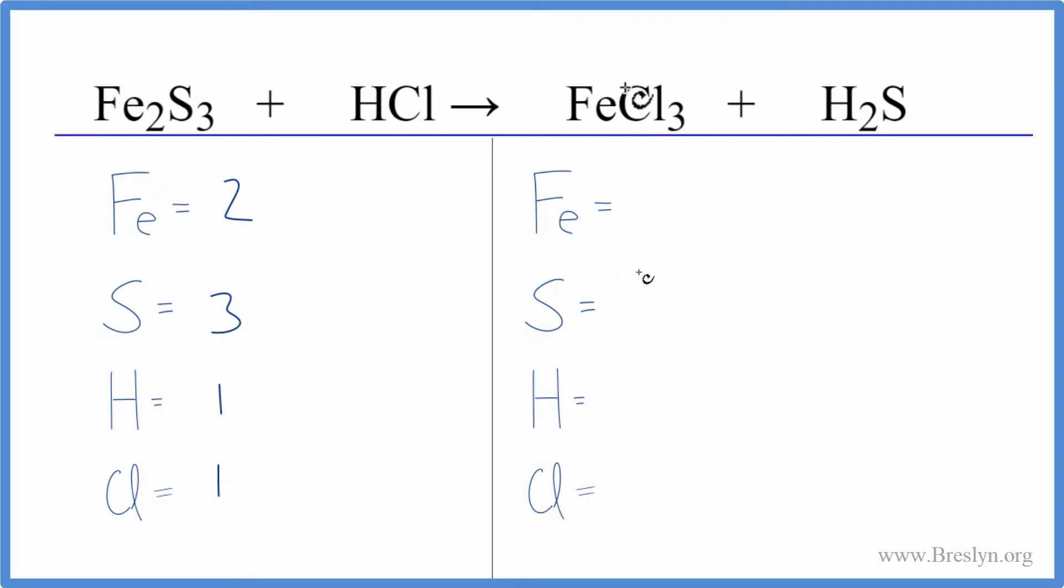On the product side, we have one iron, one sulfur, two hydrogens, and three chlorine atoms.